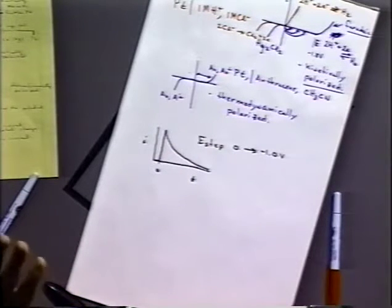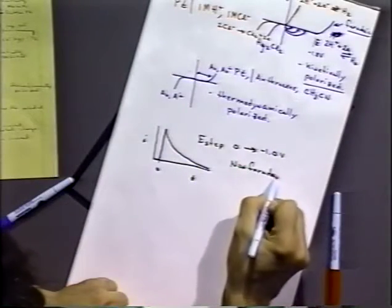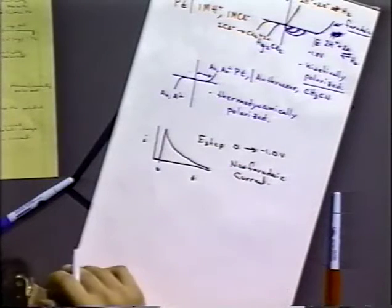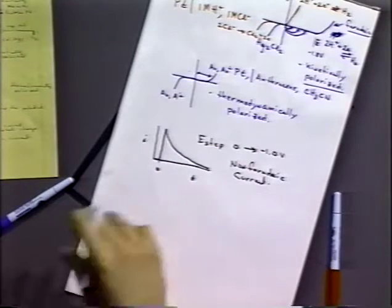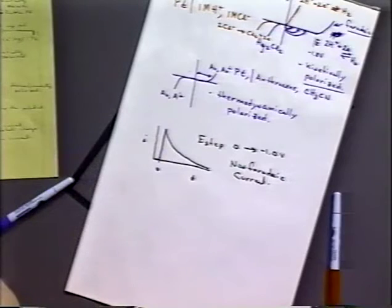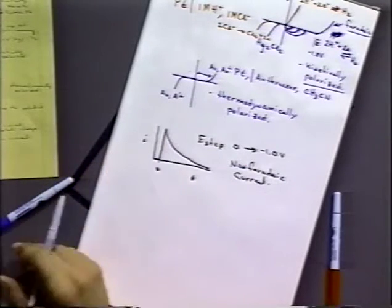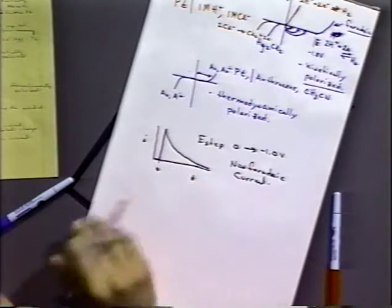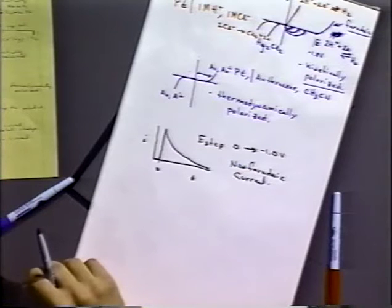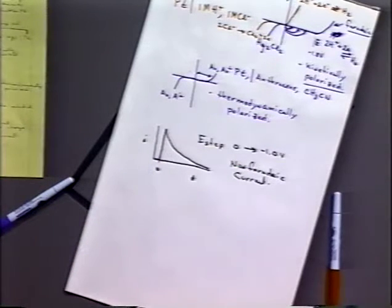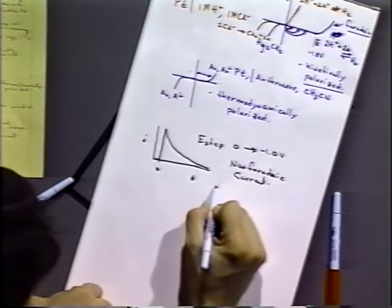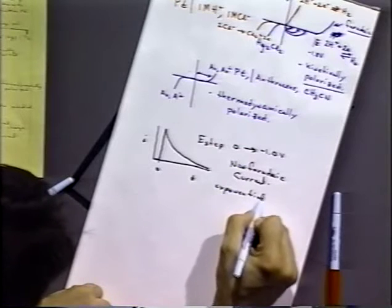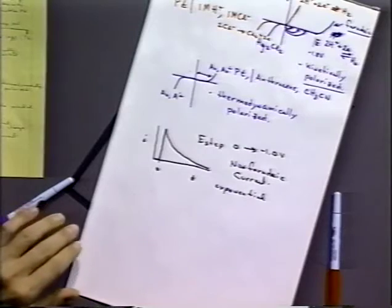In this dynamic experiment, we predict no faradaic current will flow, so the current that's flowing must be a non-faradaic current. We can integrate that current to get the amount of charge that flows, and notice it goes to zero in an asymptotic approach. After a reasonable amount of time it's effectively equal to zero. The curve looks like an exponential decay — it has the characteristic of a mathematically exponential function.